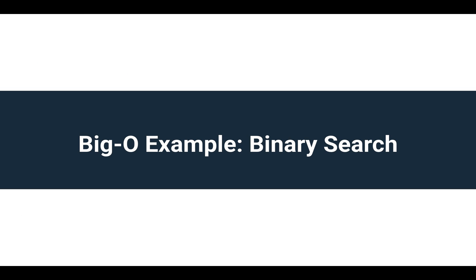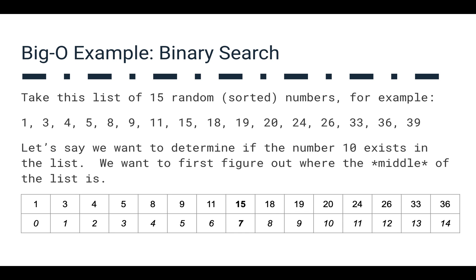So let's take a straightforward example here. We're going to take a look at binary search and try to analyze how long it's going to take. So if we look at a Big O example of binary search, we've got a list of 15 randomly generated numbers. They're in sorted order. Let's take a look at this list: 1, 3, 4, 5, 8, 9, 11, 15, 18, 19, 20, 24, 26, 33, 36, 39. So they're in order.